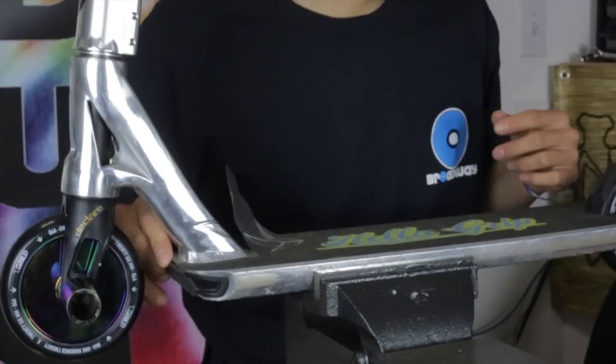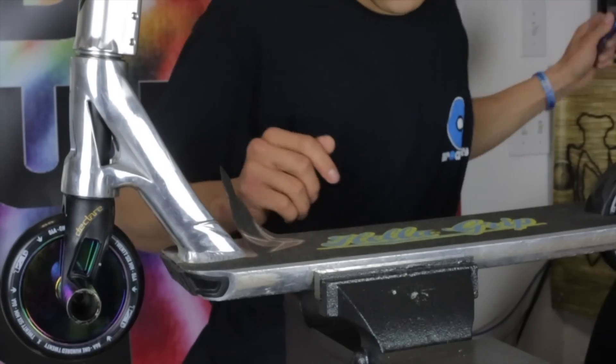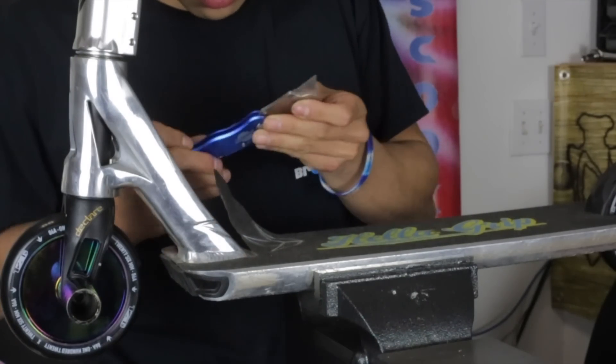If you can't reach the corners, what you can do is always grab a blade, get underneath there and it should come right off.